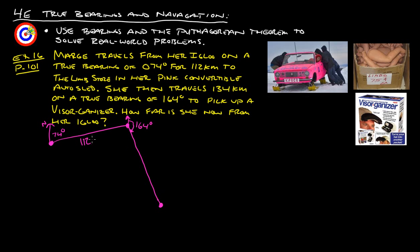This one here is 112 kilometers that she travels to get her limbs at the limb store. Then she travels 134 kilometers to get the visor-ganizer. How far is she now from her igloo? We're trying to find this length right here. What we gotta do is try to figure out, we only have these two here. This needs to be a right angle here in order for us to be able to use our dear friend Pythagoras' theorem to figure this out. Let's try to figure out what this angle is right here.